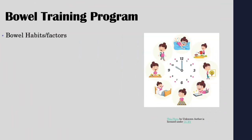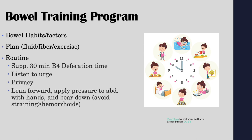When implementing a bowel training program, begin by assessing the patient's bowel habits and factors that may affect defecation. Plan to include fluid, fiber, and exercise, and help establish a routine. The routine should include a suppository 30 minutes before the planned defecation time, as the patient should be trying to defecate at the same time every day. Advise the patient to listen to the urge to defecate, provide privacy, encourage proper positioning — leaning forward and applying pressure to the abdominal area with their hands — and bear down. Advise the patient to avoid straining, as this can produce hemorrhoids. As the nurse, always provide feedback and encouragement.